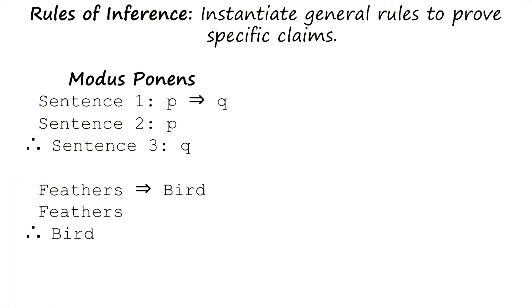Let's take an example. Imagine that I'm given that feathers imply bird, and I'm also given that feathers is true. Then I can infer that bird must be true.